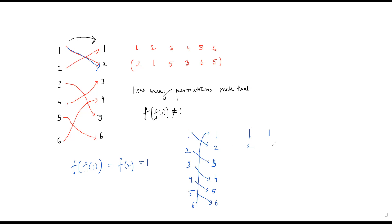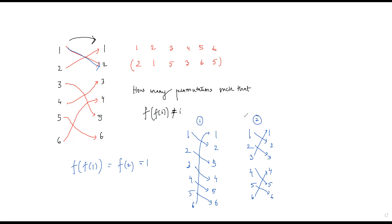Another example: 1→2, 2→3, 3→1, 4→5, 5→6, 6→4. Observe f(f(1)) = f(2) = 3 ≠ 1. You can verify that for any i in this permutation, f(f(i)) ≠ i. So these are two such examples, and the question is how many such permutations exist in total.